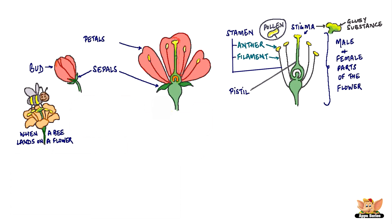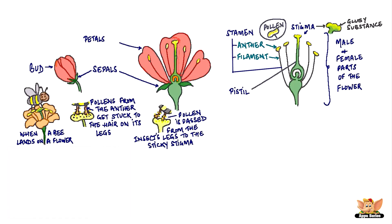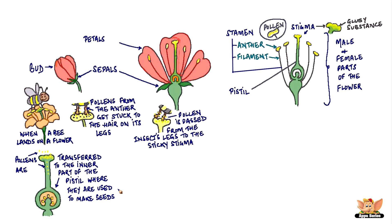When a bee or an insect lands on a flower, the pollen from the anther sticks to the hair on its legs. When the insect or the bee moves on to the next flower, the pollen is passed from the insect's legs to the sticky stigma and from here transferred to the inner part of the pistil, where it is used to make seeds.